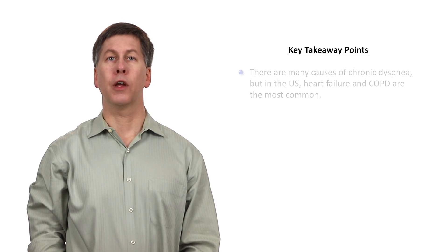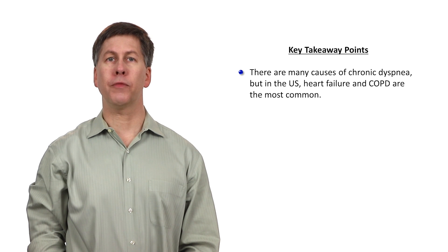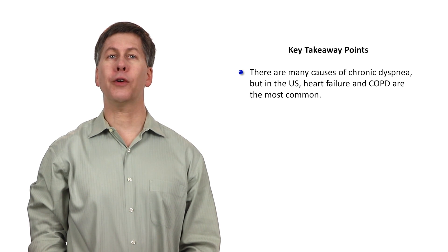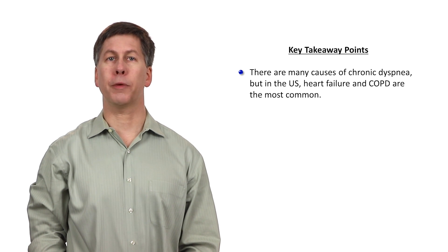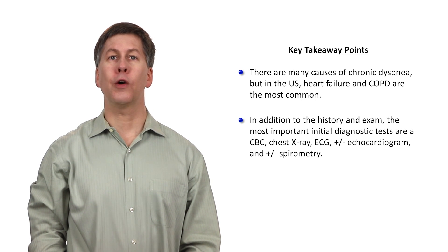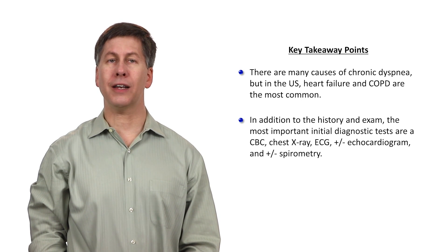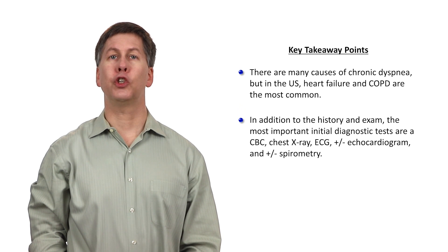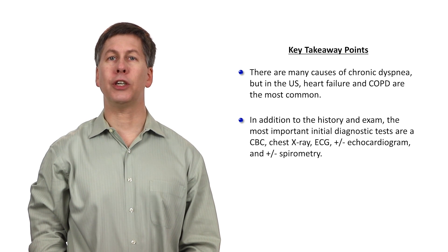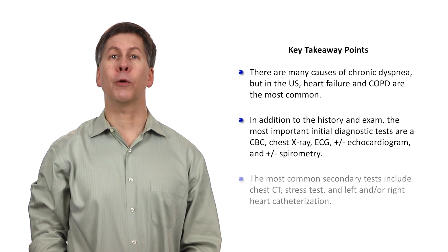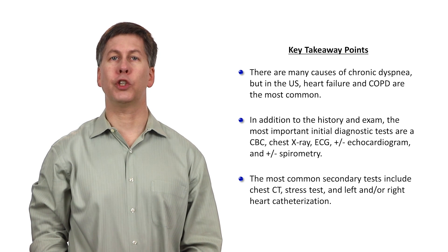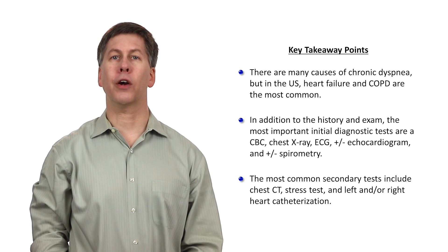That was the approach to chronic dyspnea. Key takeaway points: there are many causes of chronic dyspnea, but in the US, heart failure and COPD are the most common. In addition to history and exam, the most important initial diagnostic tests are a CBC, chest x-ray, ECG, plus or minus an echocardiogram, and plus or minus spirometry. And last, the most common secondary tests include chest CT, stress test, and left and or right heart catheterization.